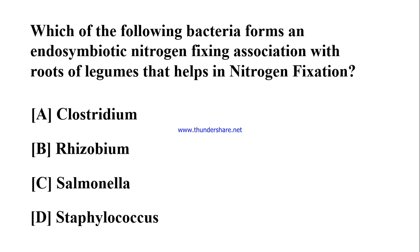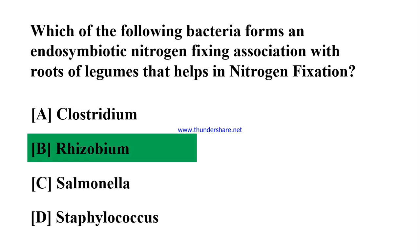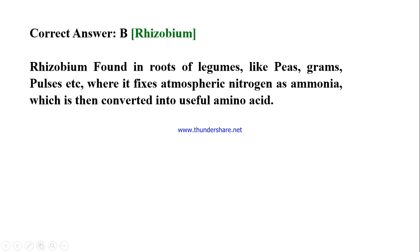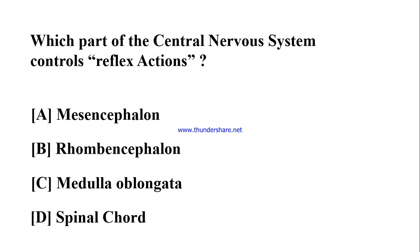Which of the following bacteria forms an endosymbiotic nitrogen-fixing association with roots of legumes? A) Clostridium, B) Rhizobium, C) Salmonella, D) Staphylococcus. Correct answer: B) Rhizobium. Rhizobium is found in roots of legumes like peas, grams, and pulses, where it fixes atmospheric nitrogen as ammonia, which is then converted into useful amino acids.